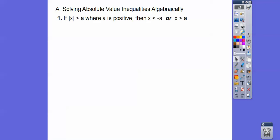Here are the rules. If we have an absolute value greater than some positive number a, remember absolute value is always positive. If the inequality is pointing away from the absolute value, we answer it like this: the inside piece is less than negative a, or — and we have to use the 'or' — the inside piece is greater than positive a.